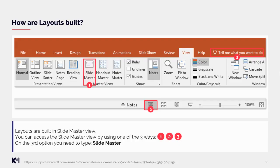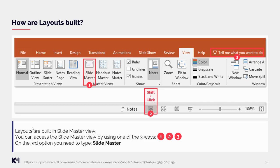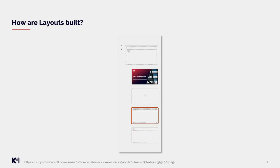Layouts are built in slide master view. You can access the slide master view through three options: first, go to the View tab and press Slide Master; second, find the normal view icon at the bottom of the window and press Shift + click as a shortcut; third, some versions of PowerPoint have a 'Tell me what you want to do' button where you can type 'slide master' to find the view.